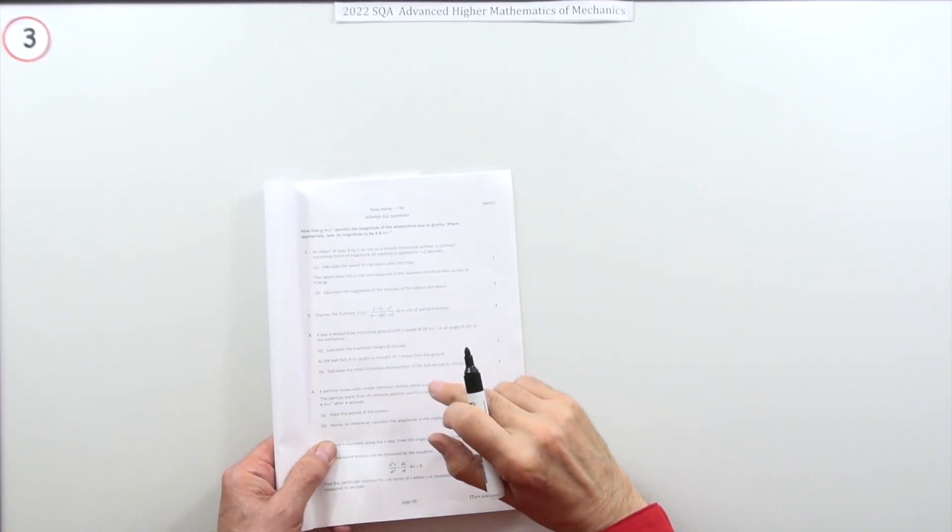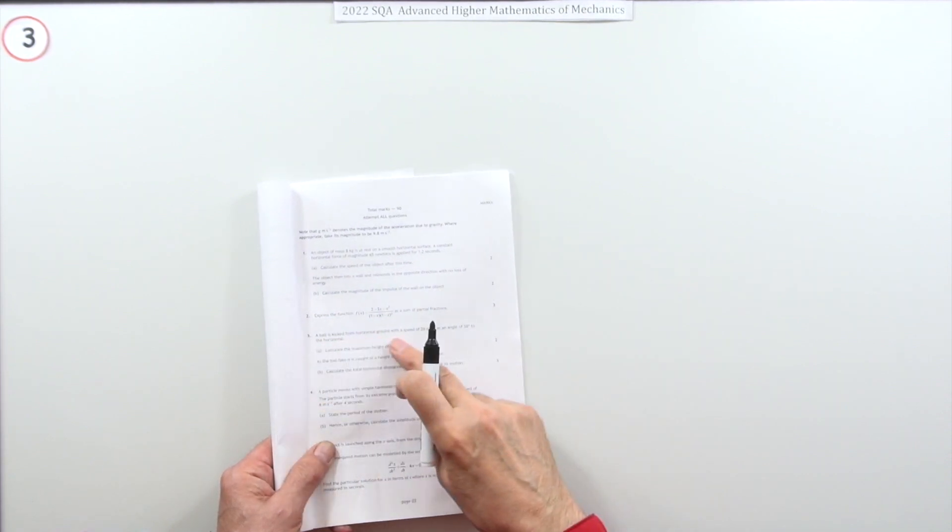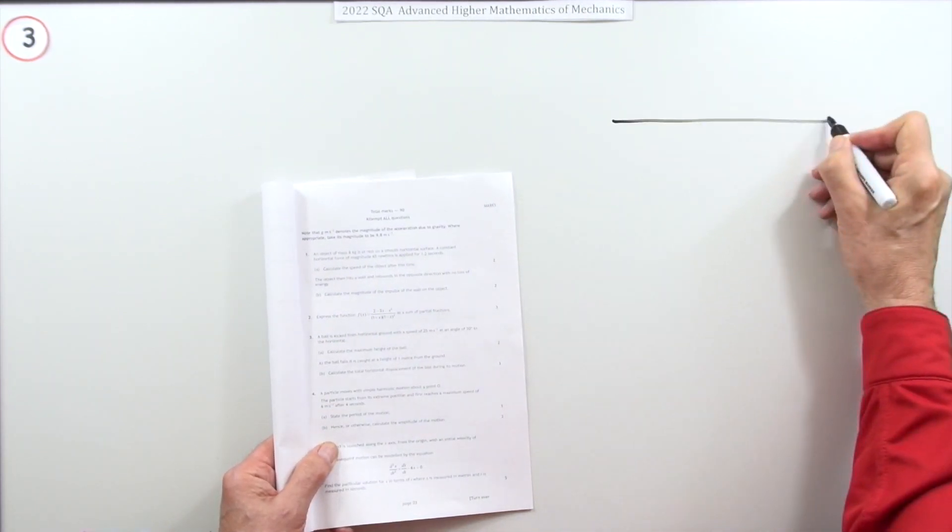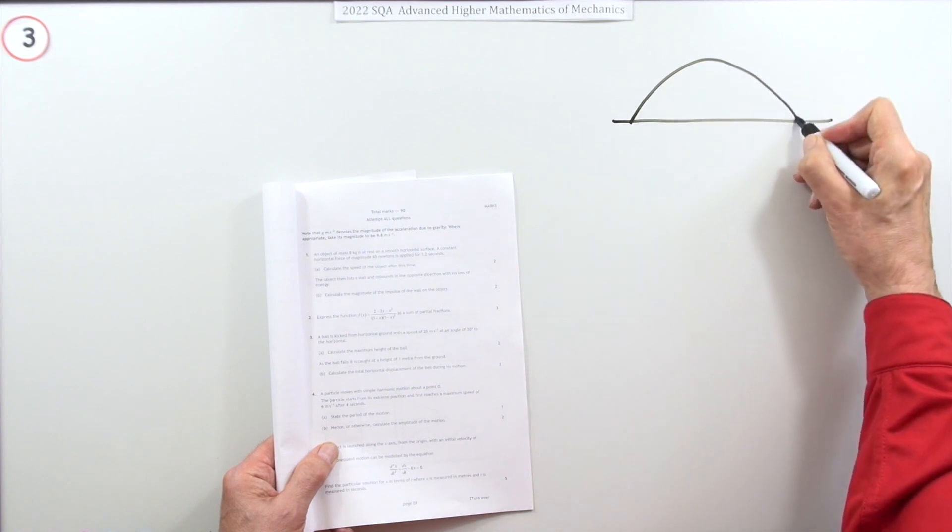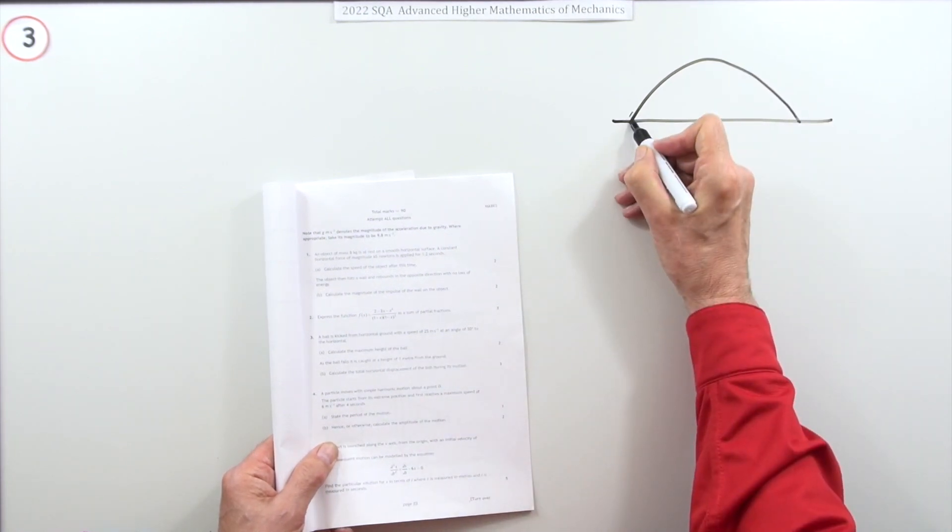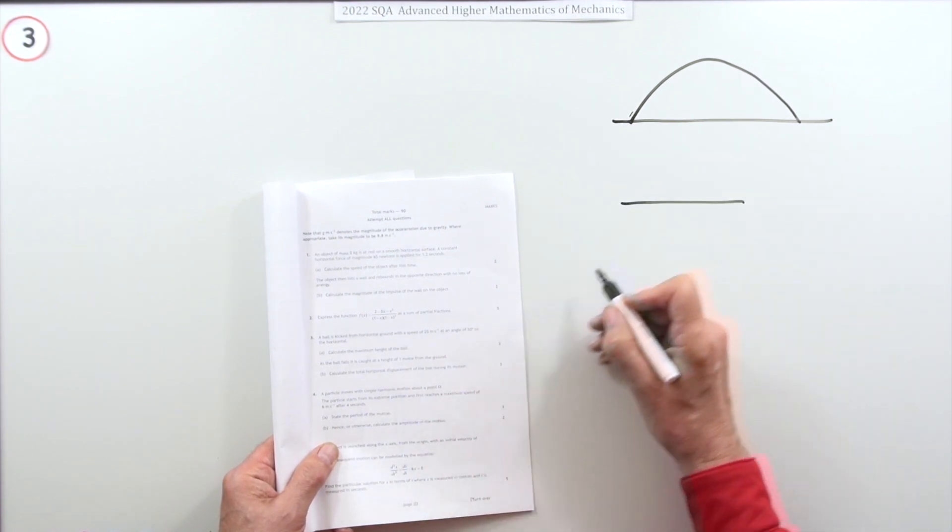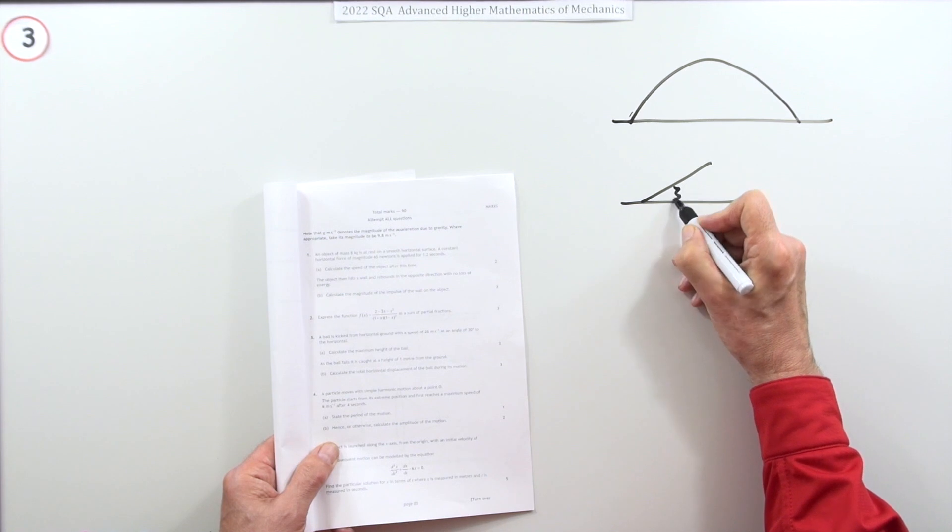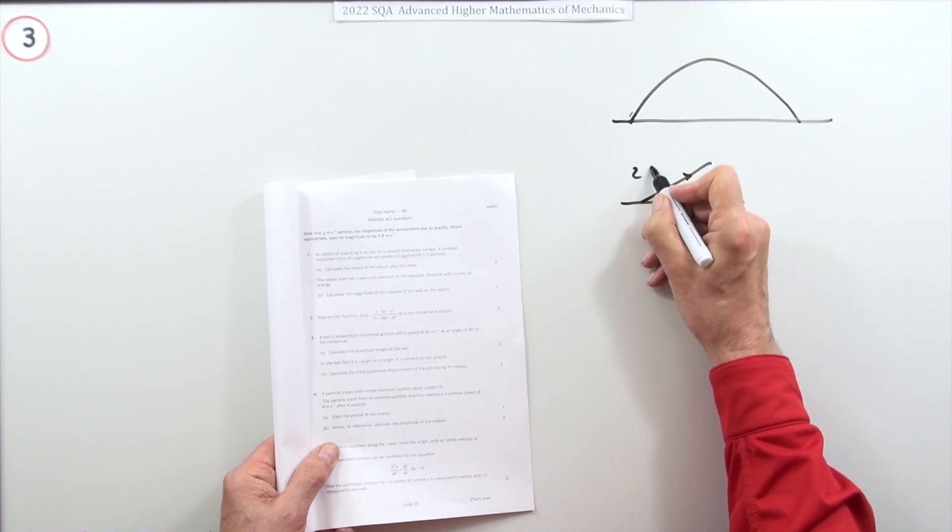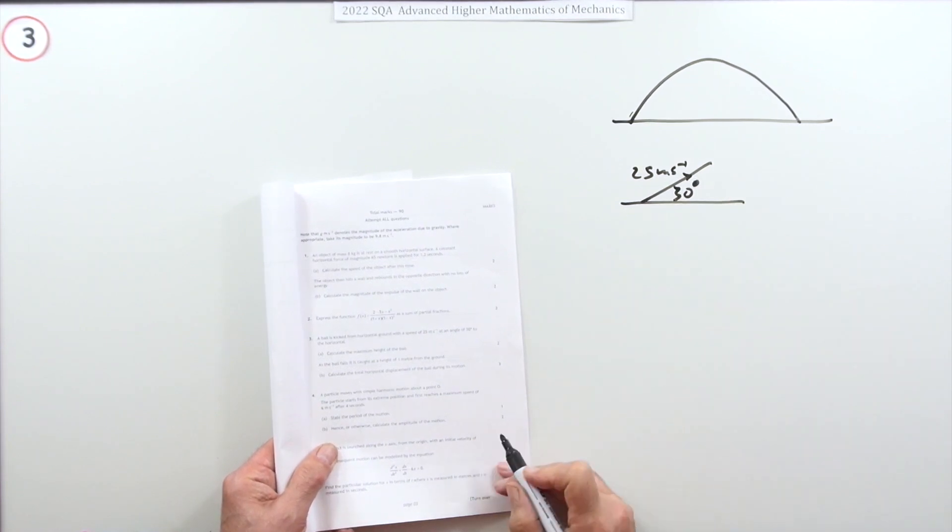So question three from the 2022 mechanics paper, five mark question. A ball is kicked from horizontal, projectile motion, so there's that little parabola there with an initial speed, presumably from ground level, with initial speed of 25 meters per second at an angle of 30 degrees. So that's quite shallow, heading off like that.